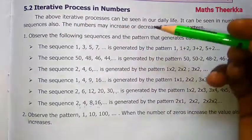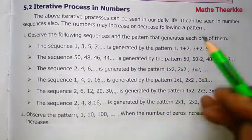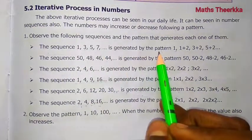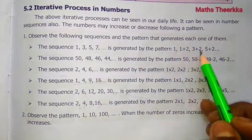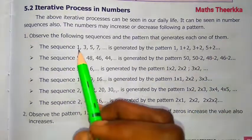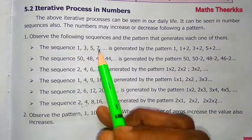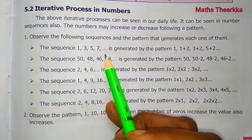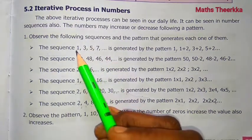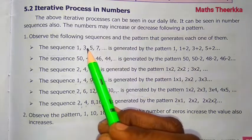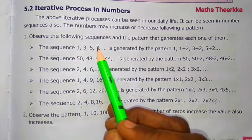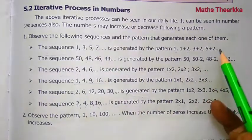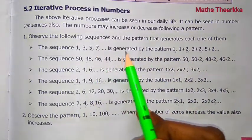In interactive processes, we look at different types of patterns in numbers. The sequence 1, 3, 5, 7 is generated by the pattern: 1, 1+2=3, 3+2=5, 5+2=7. These are odd numbers. The pattern generates by adding 2 each time: 1, then add 2 gives 3, add 2 gives 5, add 2 gives 7, add 2 gives 9. The pattern is plus two each time.